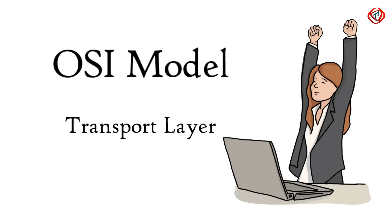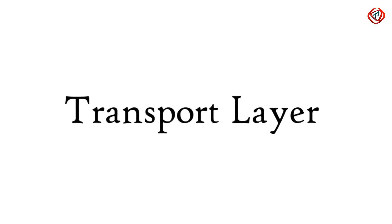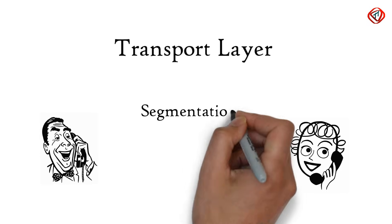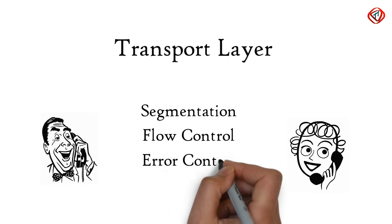The layer below the session layer is the transport layer. The transport layer controls the reliability of communication through segmentation, flow control, and error control.